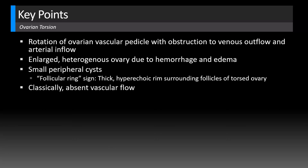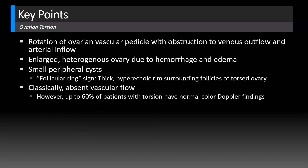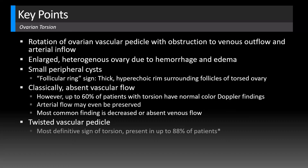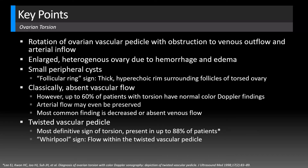Classically there'll be absent vascular flow, but keep in mind that up to 60% of patients with torsion will actually have normal intact color Doppler flow. Even more concerning, you might even have intact arterial flow. What we most commonly see is decreased or absent venous flow. We sometimes see the twisted vascular pedicle, which is actually the most definitive sign of torsion, present in up to 80% of patients according to a study by Dr. Lee. With that, we may see the whirlpool sign — when you add flow to this twisted vascular pedicle, you'll see a twisting, whirling of the color Doppler.